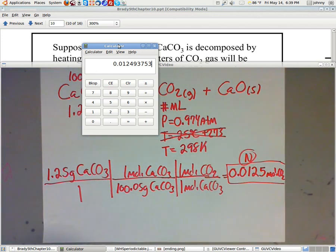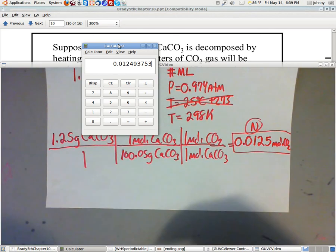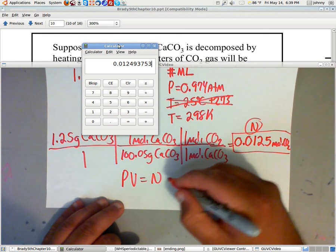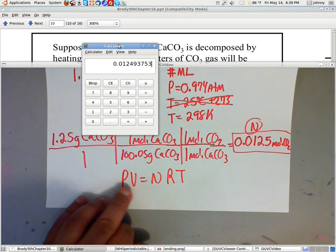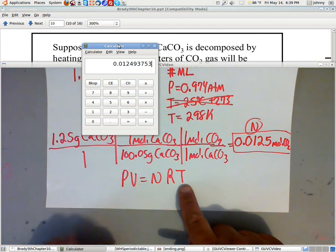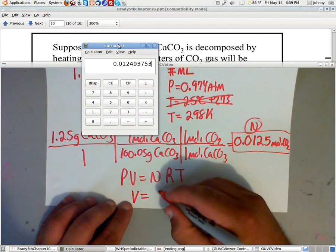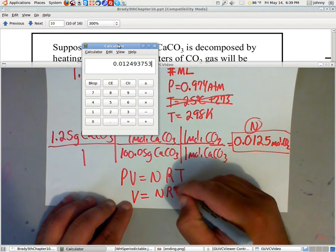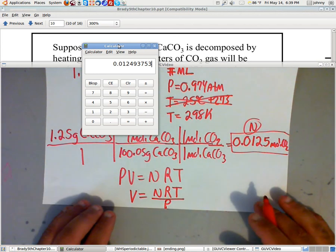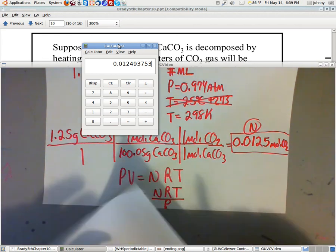So now I can use the ideal gas law, which is PV equals NRT. I know the pressure, I'm looking for the volume, I now know the number of moles, I know the gas constant, I know the temperature. So what I'm gonna do is I'm gonna solve this for V. So my V will be equal to basically NRT being divided by my pressure. Now, I'll need another sheet of paper, I'm getting that right now. I wanna substitute into these.